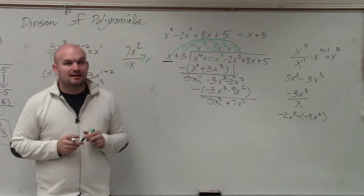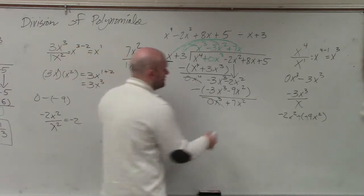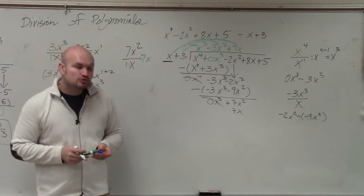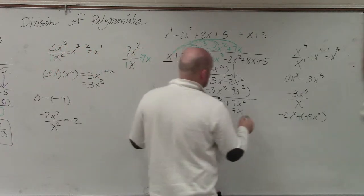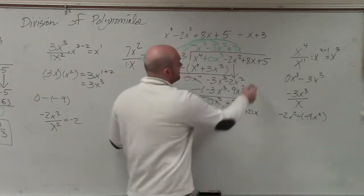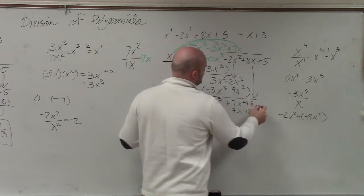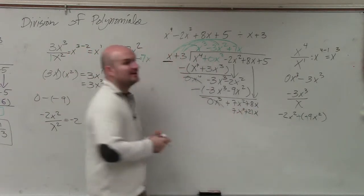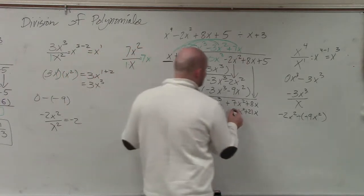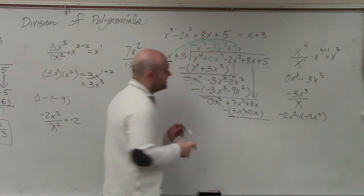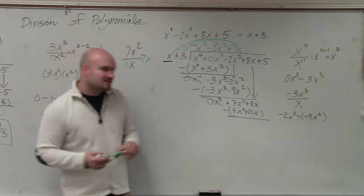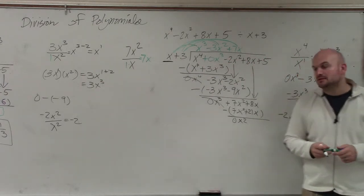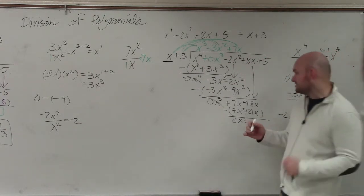7x. Now you multiply 7x times x and 7x times 3. 7x times x is 7x squared, which you should get the same thing again. Then 7x times 3 is 21x. Now I bring down the 8x. Then, oops, that's a squared. Then we do the same thing over again. We subtract. 7x squared minus 7x squared is 0x squared. 8 minus 21? Negative 13. 8x minus 21x is negative 13x.